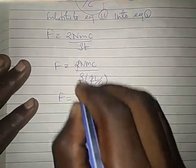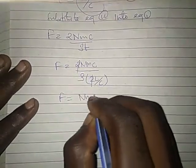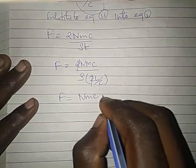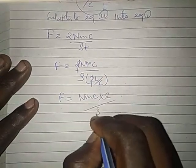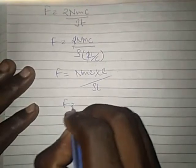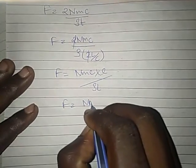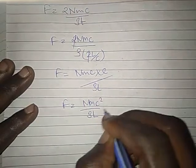We get force equals 2NMC divided by 3T. When we substitute, F equals 2NMC divided by 3 times 2L divided by C. This becomes NMC squared divided by 3L. Call this equation 3.